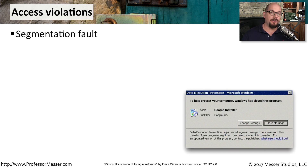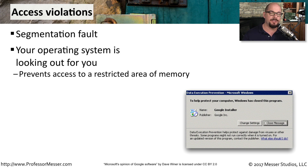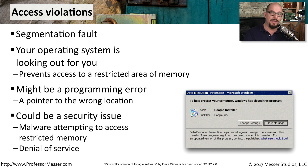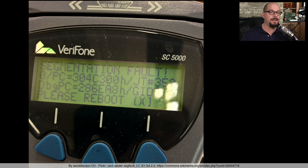A segmentation fault is an error that occurs on your operating system when an application tries to access part of memory that it should not have access to. Your operating system is constantly performing checks and making sure that applications aren't going outside the bounds of what they should be doing. This might be something as simple as a programming problem, but occasionally it can point to a security problem where a third-party application is trying to access memory it should not have access to. Segmentation faults can occur across many different operating systems — it doesn't have to be DOS or Windows; it could even be something as simple as a credit card authentication terminal.